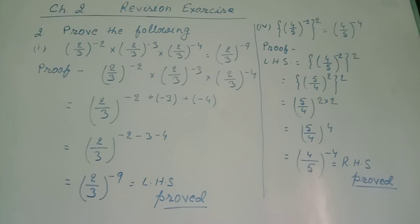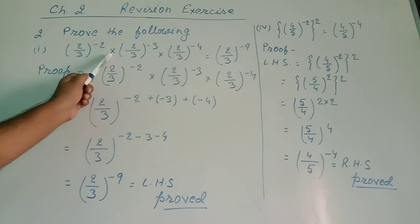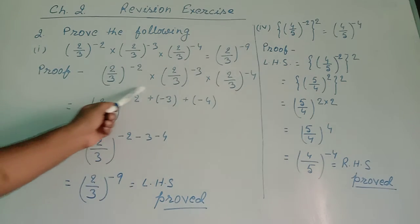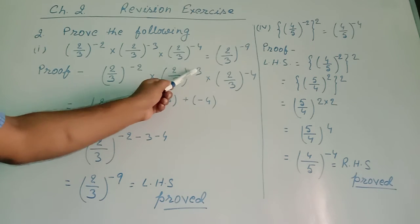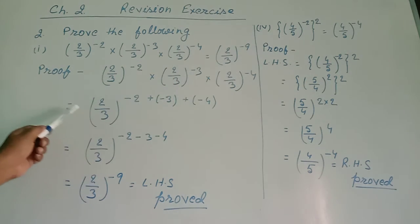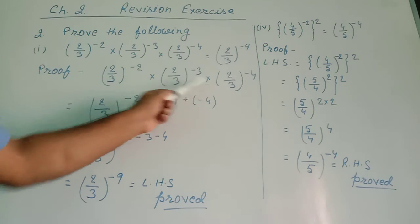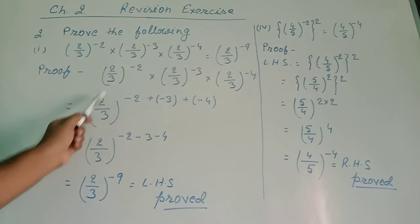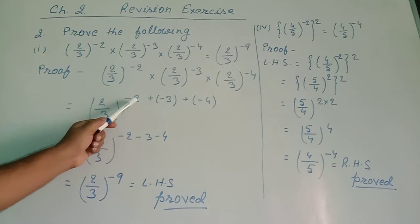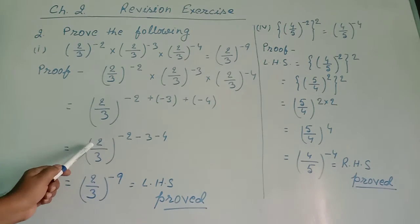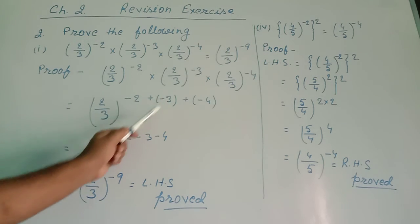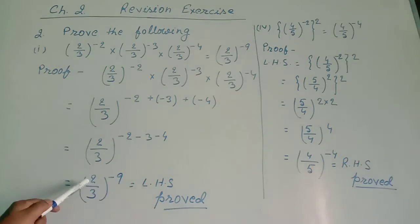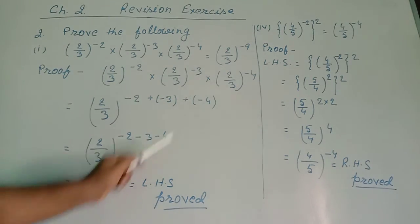Question number 2, Roma number 1. Prove that (2/3)^(-2) into (2/3)^(-3) into (2/3)^(-4) equals (2/3)^(-9). I wrote the LHS. The bases are the same, so the powers will be added: minus 2 plus minus 3 plus minus 4. That gives (2/3) to the power (−2 − 3 − 4), which equals (2/3)^(-9). This equals RHS — proved.